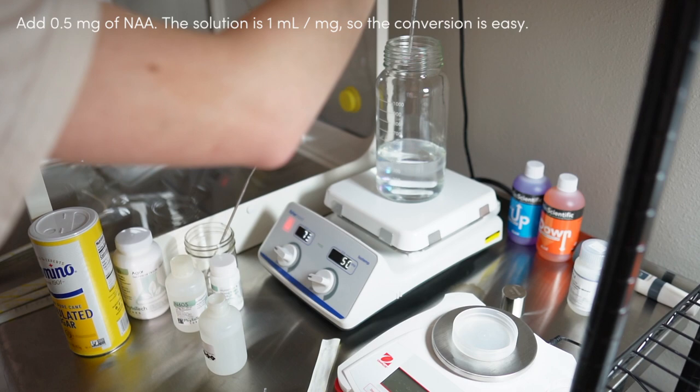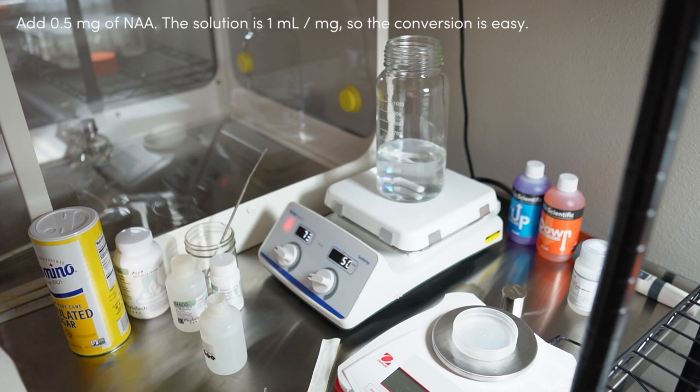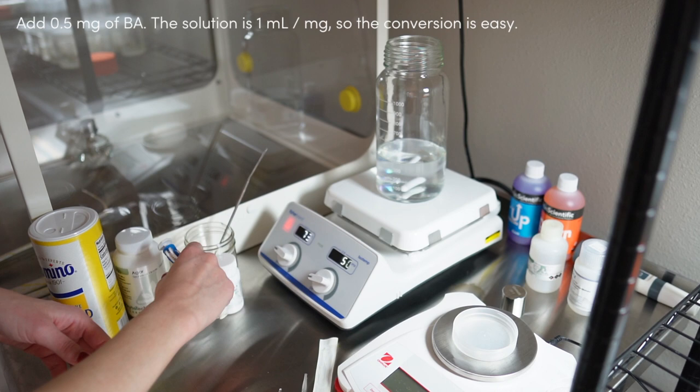Right now I'm adding half a milligram of NAA, and NAA is an auxin, so that will help with rooting. And then I also add half a milligram of BA.